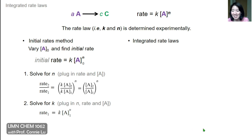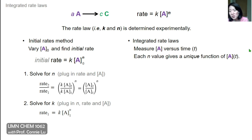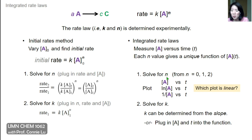A complementary method is the integrated rate laws. This experiment is slightly different in that you monitor the concentration of the reactant over the whole time course — just one experiment with multiple measurements. Every particular value of n results in a unique plot or unique function of the concentration curve over time. We will focus on just three possibilities for n: zero, one, and two, and each of these has a unique function.